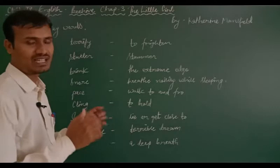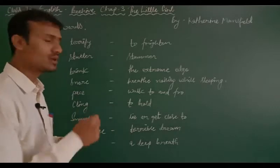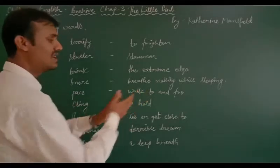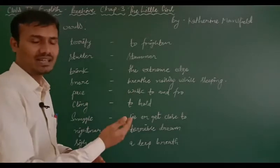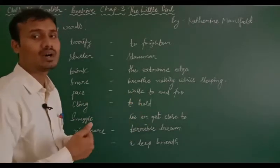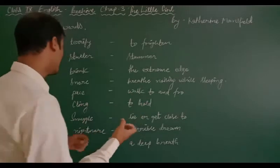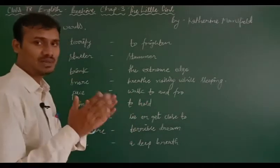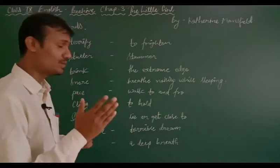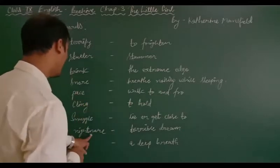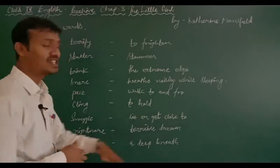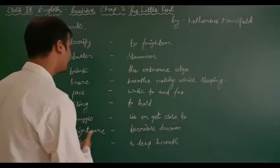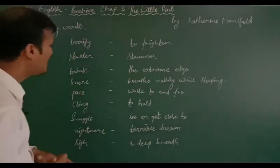Cling means to hold something tightly — kisi chiz ko zor se pakadna. Snuggle means to lie or get close to something — kisi chiz ke kareeb aana, like a pillow you have taken in your arms. Nightmare means a terrible dream — dharavna sapna. And sigh means a deep breath — ek lambi gehri saas bharna. So this is all about the keywords.